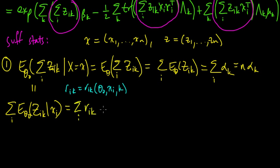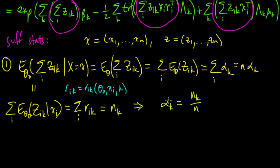We can compute those numbers. Let's call this sum N_k, since it doesn't depend on i. Now we can solve this for part of θ — we get α_k. Alpha_k is part of θ, and so α_k equals N_k divided by n. And our first step is complete.